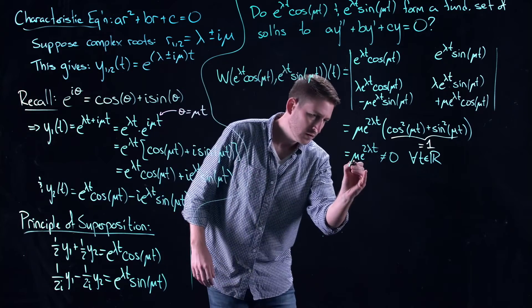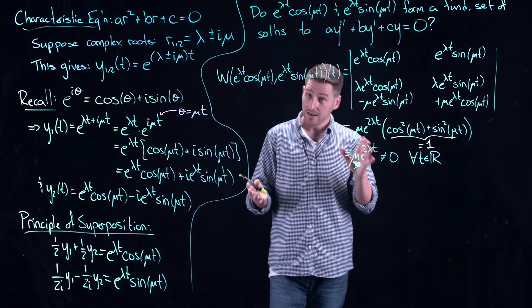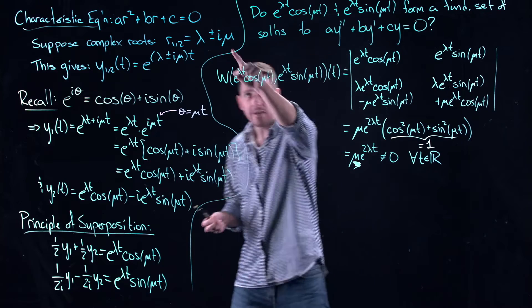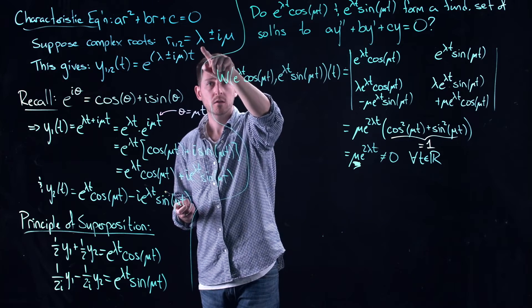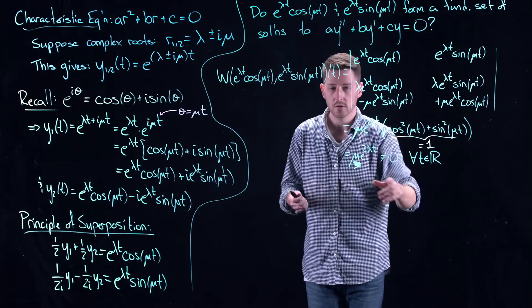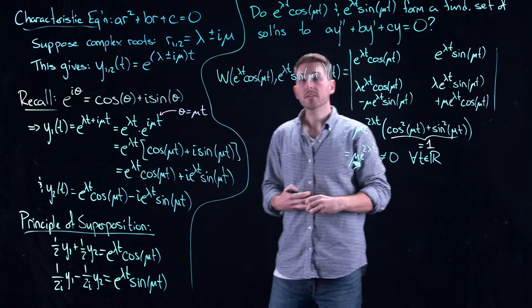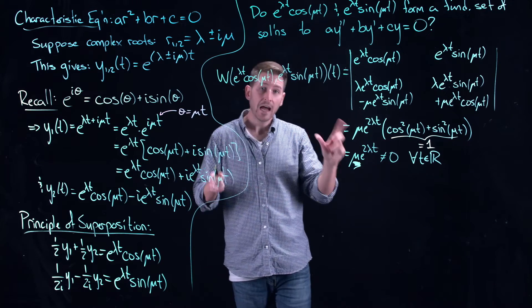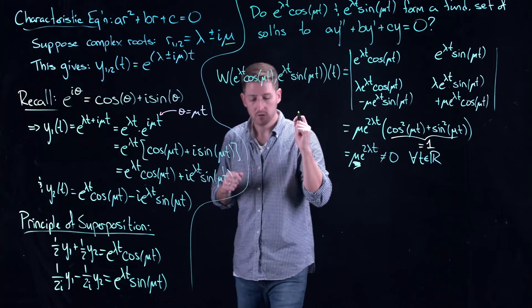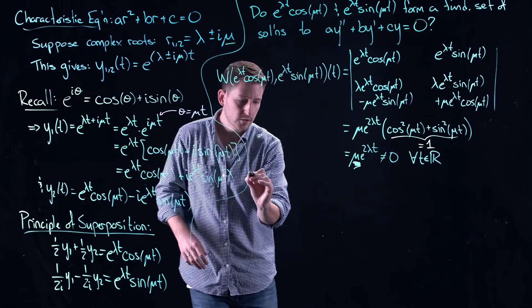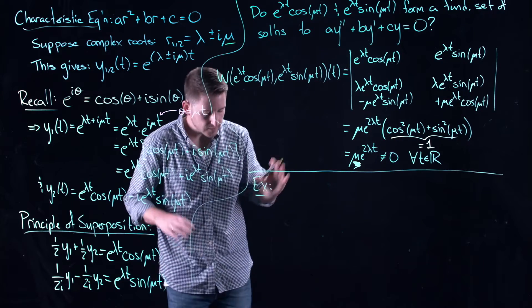There's one subtlety: the Wronskian is multiplied by μ, so this is only a fundamental set of solutions if μ ≠ 0 — meaning you actually have an imaginary component to your roots. If μ = 0, the root is just λ, which is real, and the Wronskian would be zero for every value of t. So the fundamental set e^(λt)cos(μt) and e^(λt)sin(μt) is valid as long as you genuinely have complex roots. And here's the best part: applying this is fantastically simple.